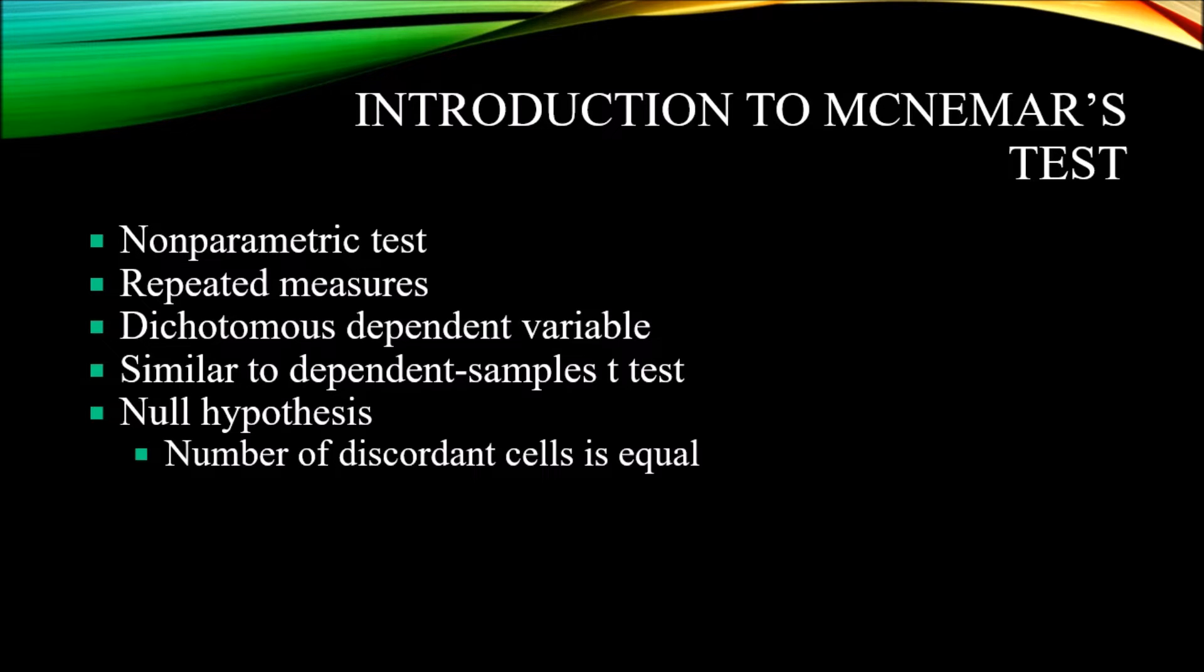McNemar's test, you have a dichotomous dependent variable. We can also think of McNemar's test as a within-subjects chi-square. If you consider the chi-square test of independence, just like with McNemar's test, you have a two-by-two contingency table.